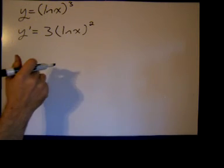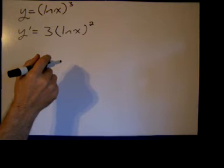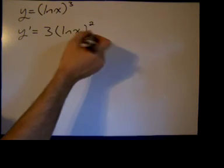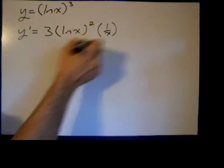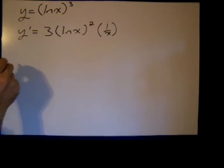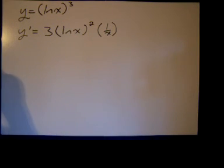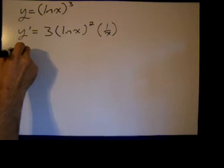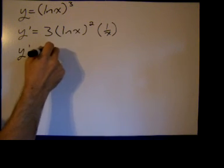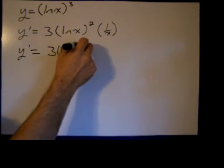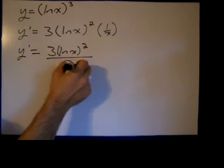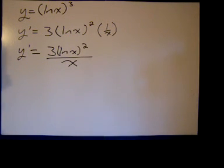Now we take the derivative of the inside function, which is just 1 over x. The derivative of the natural log of x is 1 over x. So if we wanted to kind of slam that together, we could say that y prime equals 3 natural log of x squared over x and that's it.